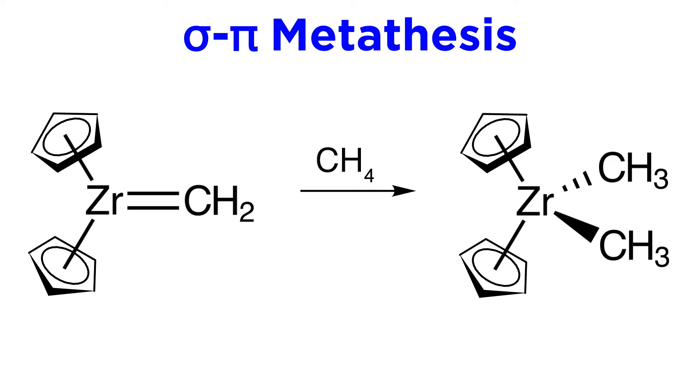To see another concrete example, let's bring back that zirconium complex, but this time we have this CH2 substituent. This can react with methane via sigma-pi metathesis, and this will result in two methyl substituents on the zirconium, one being from methane, and the other resulting when one hydrogen from methane joined the ligand.